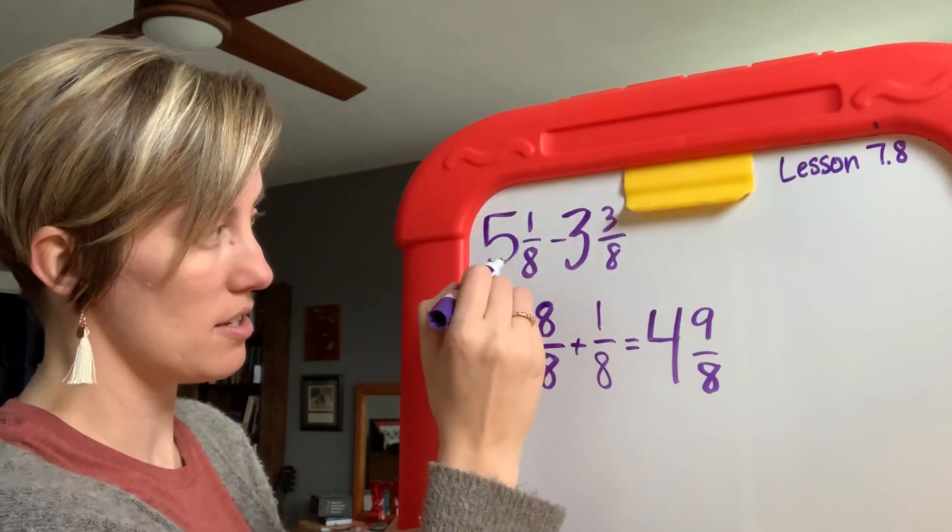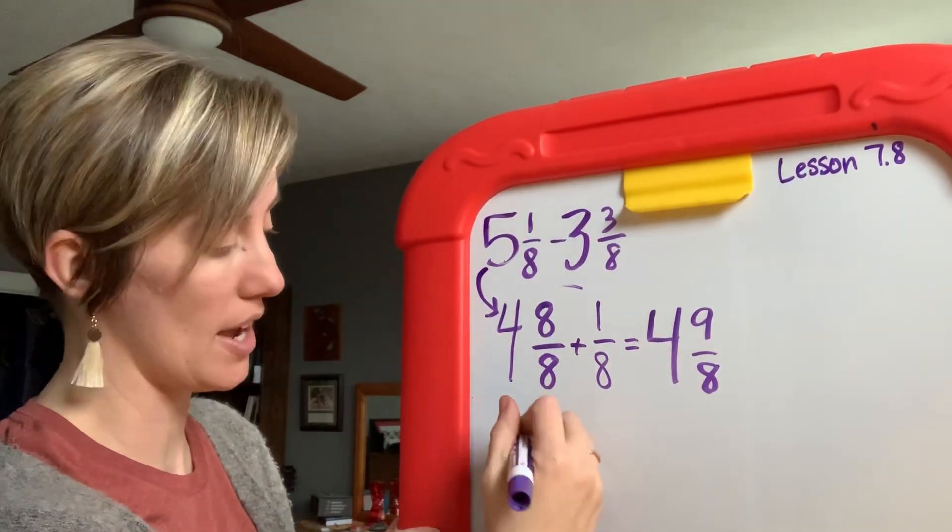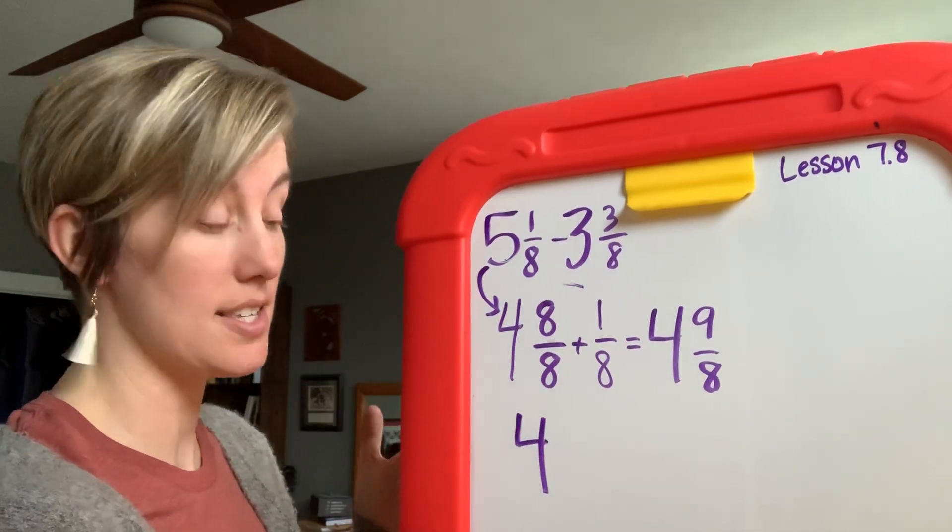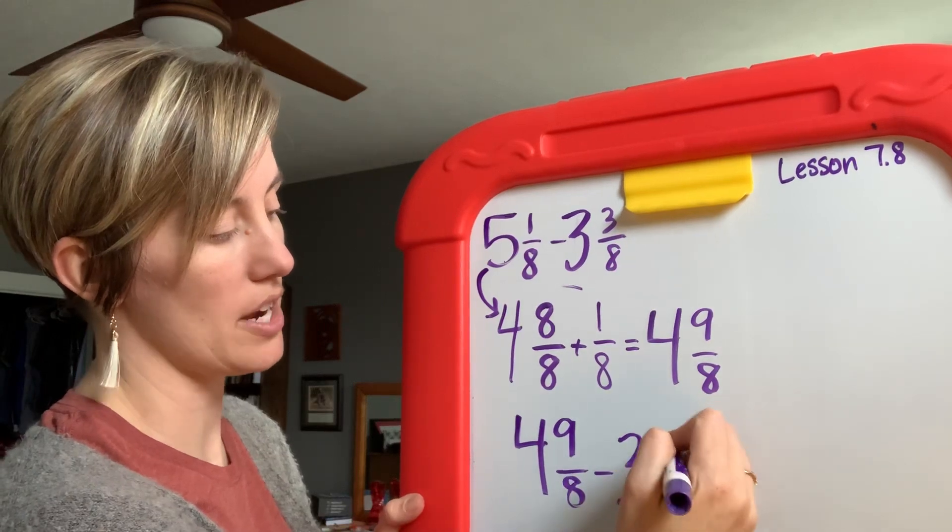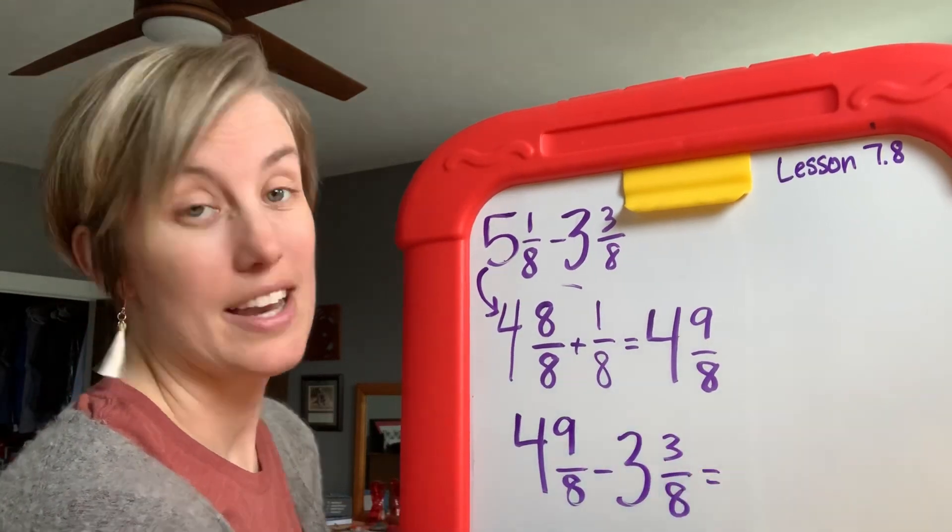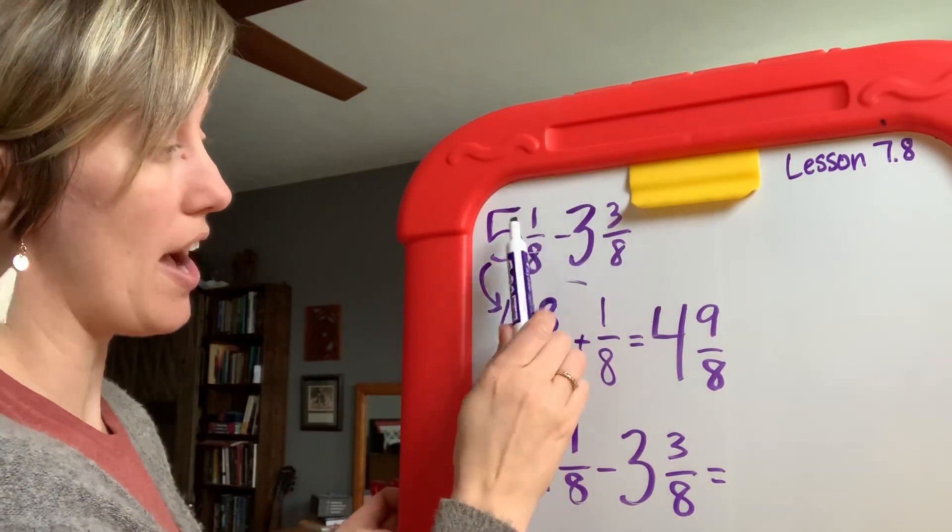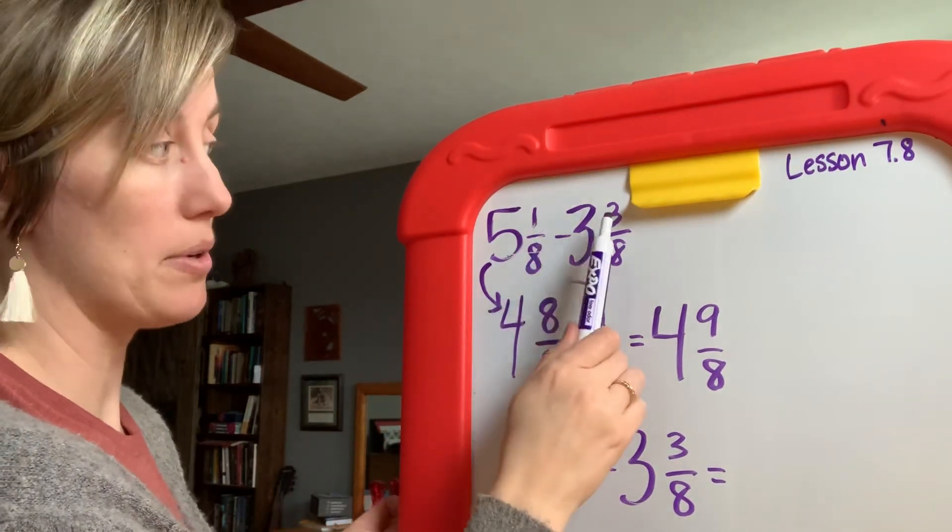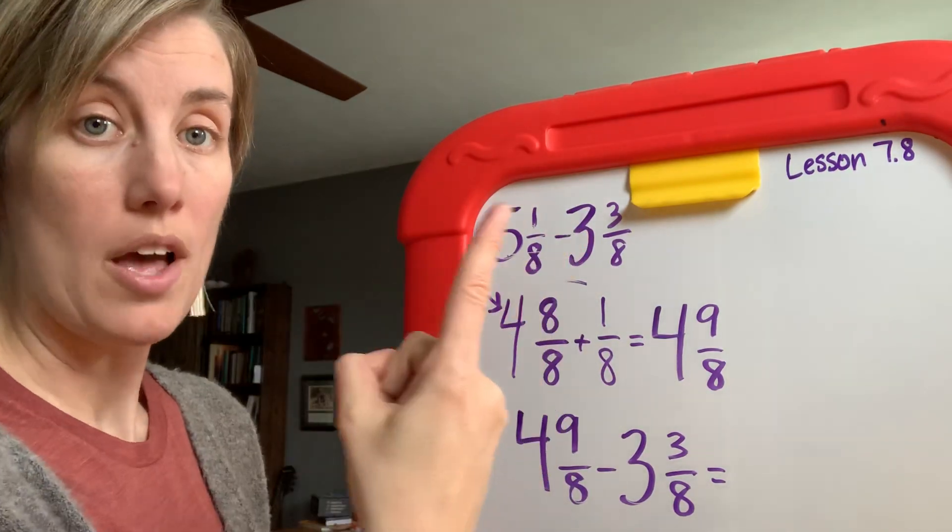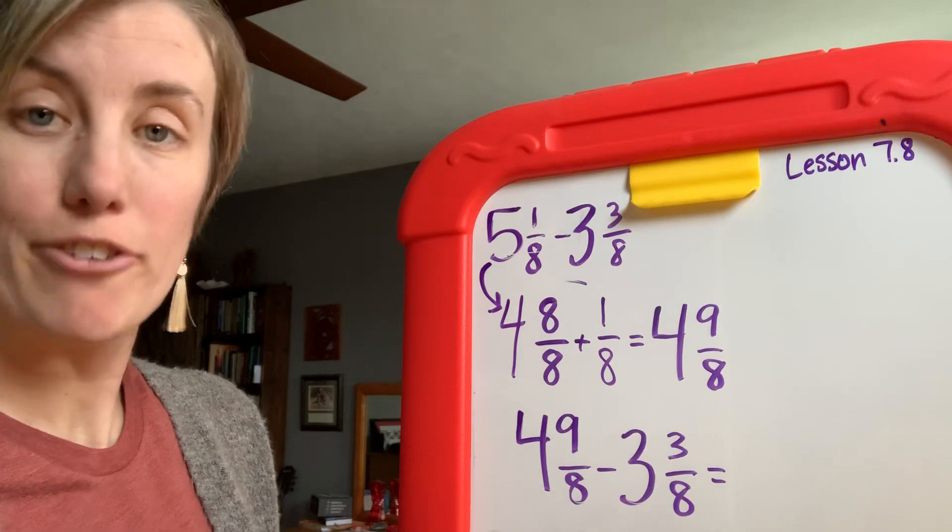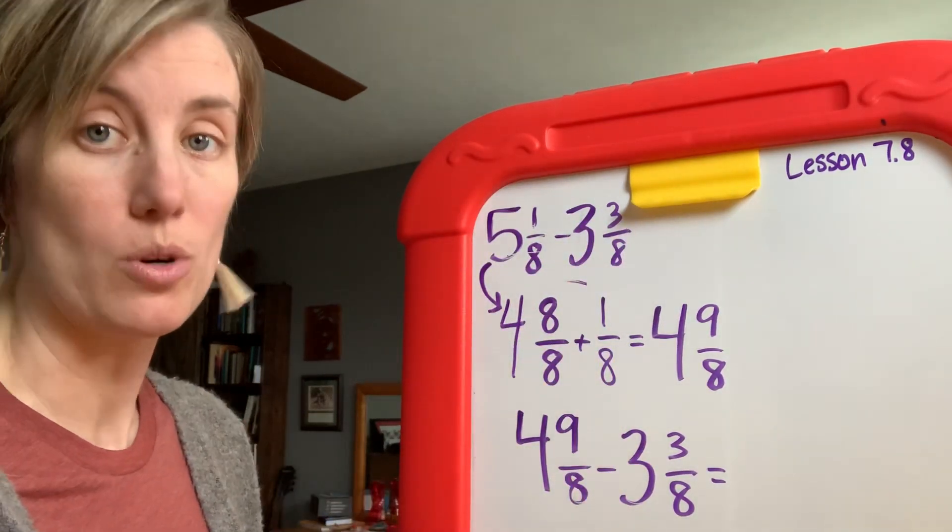So that's 5 and 1/8. My number here, this and this and this are all the same thing, so I can successfully say that 4 and 9/8 minus 3 and 3/8. Now this is possible, right? Before this was impossible because if I have a one here and I want to take away three I can't do that. If I have one apple I can't take three apples away from one apple, that is impossible.